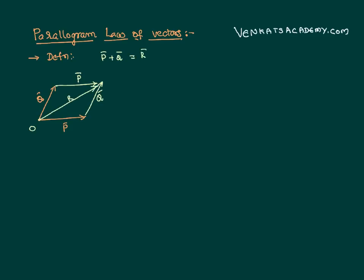The resultant will have a certain magnitude and direction. We are going to find out the resultant vector's magnitude and direction. We are also assuming that these two vectors have a certain angle theta between them. So the parallelogram law simply tells you that if two vectors are represented as two adjacent sides of a parallelogram starting from the same point, the resultant is the diagonal of the parallelogram passing through the same common point.